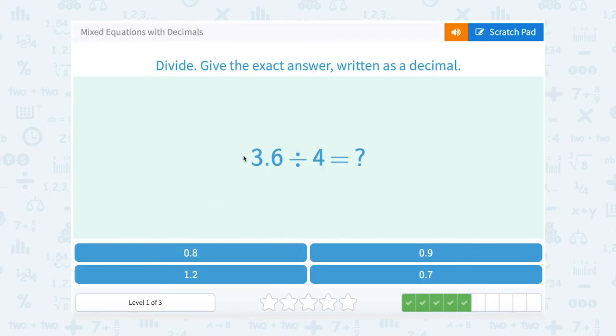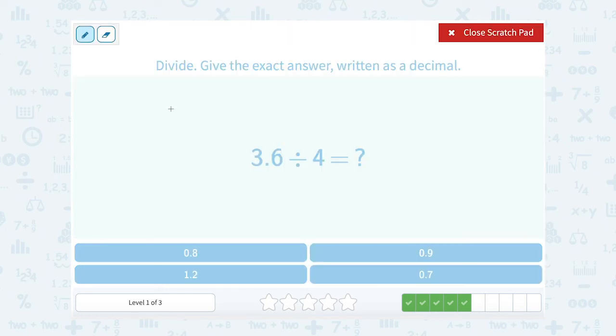3.6 divided by 4. So I'm going to write it like this, 3.6 divided by 4. And I'm going to line up the decimal right above where it is here. 4 does not go into 3, so I'm going to put a 0 there.